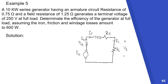Example number 5. In this example we are going to have a problem on the series generator. A 10 kilowatt series generator having an armature circuit resistance of 0.75 ohm and a field resistance of 1.25 ohm generates a terminal voltage of 250 volts at full load. Determine the efficiency of the generator at full load, assuming that the iron, friction, and windage losses amount to 600 watts.